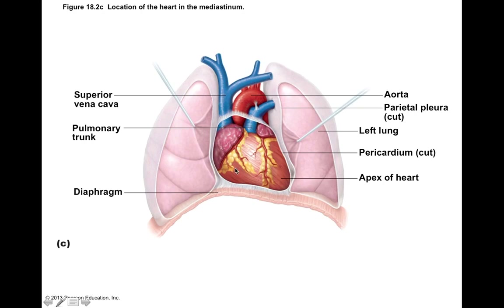One thing to point out right now: these vessels emerging on the superior side of the heart are called the great vessels. The great vessels include things like your pulmonary trunk and your aorta. They're called the great vessels because they're so big and they take blood from the heart and carry it out towards the lungs or towards your body, depending on which one it is.